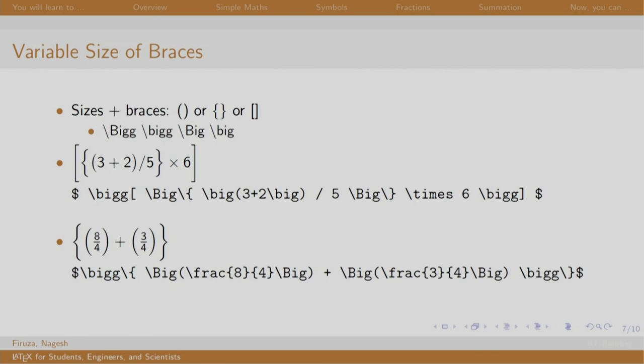The syntax for varying the size of the braces is a style and the appropriate brace. The styles are bigg with a capital B, bigg with a small b, big with capital B and big with small b. As you can see this particular expression is written using this command. Let us modify the example that we just created.